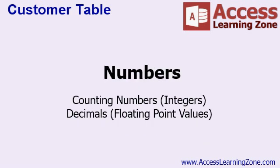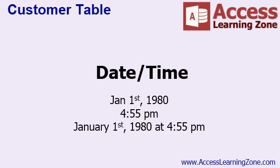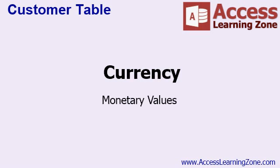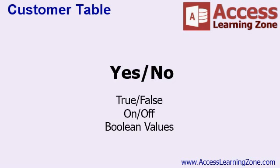Next we have Numbers. Numbers can store either counting numbers — integer values — or decimals, floating point values. Numbers are best used for data that you need to perform calculations on, such as calculating a sum or average. A DateTime field can store either a date, a time, or both together — for example, January 1st 1980 at 4:55 PM. Currency is a special data type optimized for working with dollars and cents or your local currency. A Yes/No data type stores a Boolean value: true/false, on/off, yes/no.